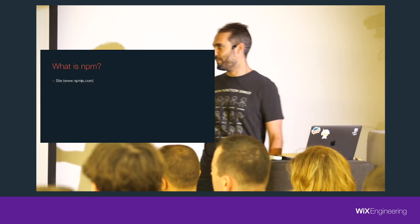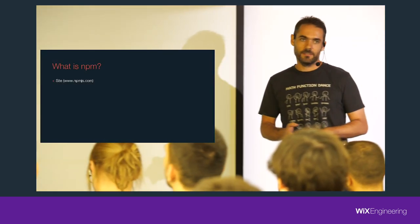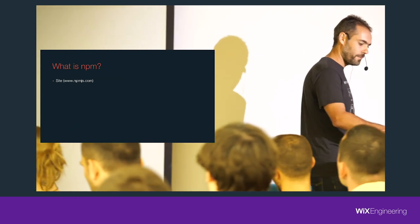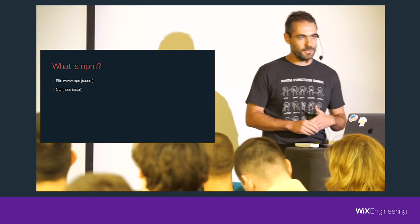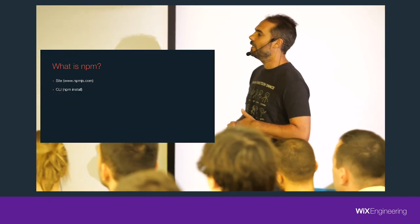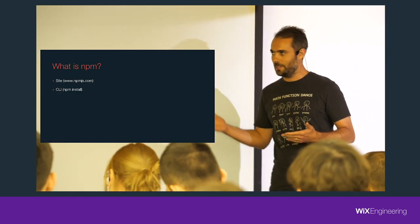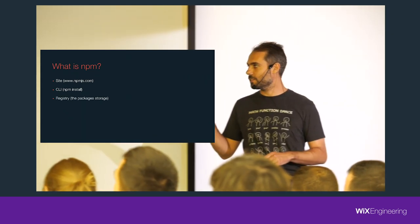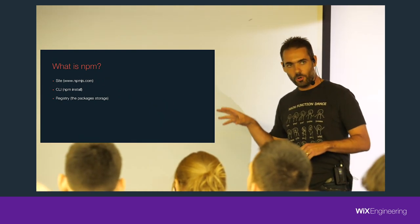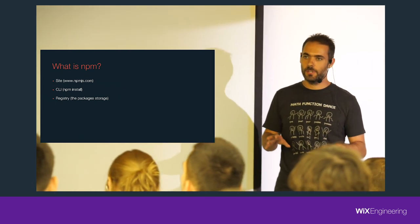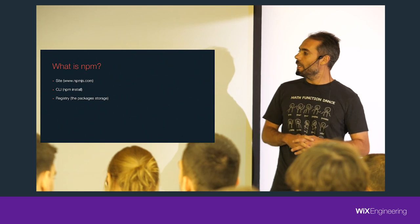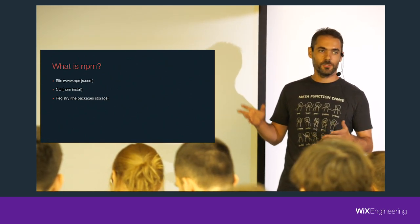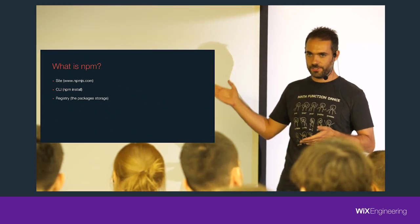NPM is actually three things. First, it's a site where you can search for packages or read documentation. Second, it's a CLI — command line interface — which allows you to run commands like npm install. The last one is a registry; that's actually the main part — it's home to a lot of JavaScript packages, and even if you use Yarn, you still use that registry.